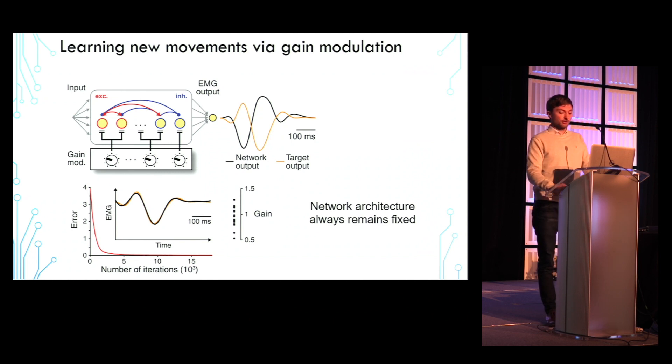In the example I just showed, we used 20 modulatory units, which each control the gain of a group of 10 randomly chosen neurons.